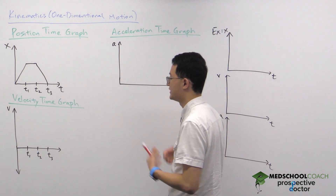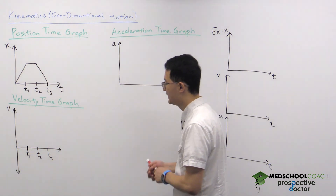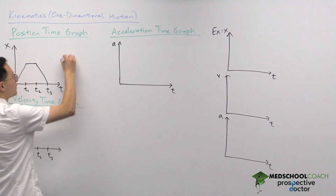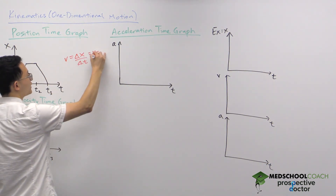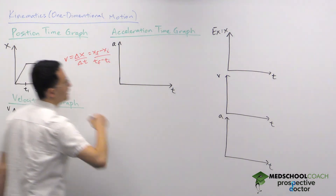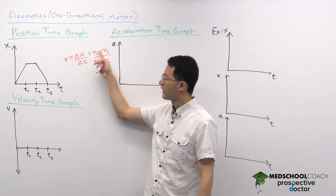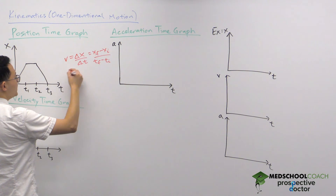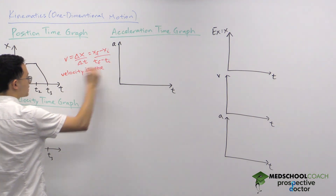The next thing is: what special information is in this graph that isn't so obvious? The key piece of information is velocity. Velocity equals change in position over change in time, which is (final position − initial position) / (final time − initial time). From your early math classes, you'll recognize this as (y2 − y1) / (x2 − x1) — the slope of the graph. So velocity is the slope of the position-time graph.